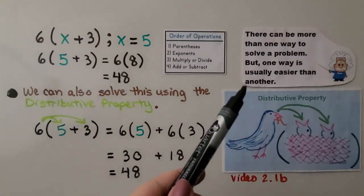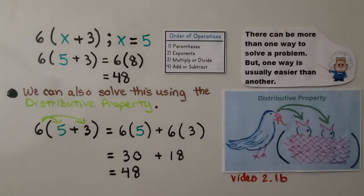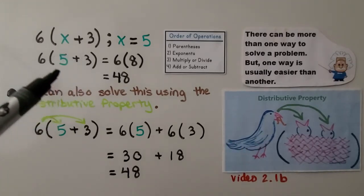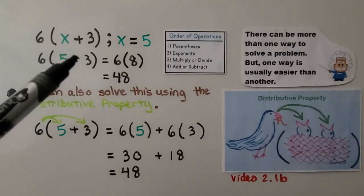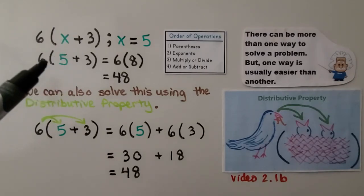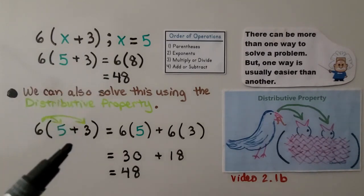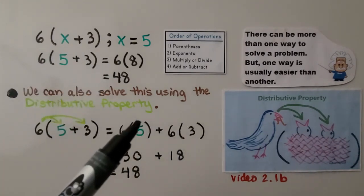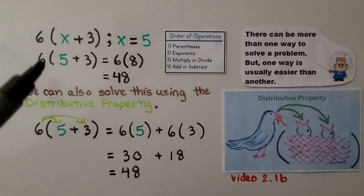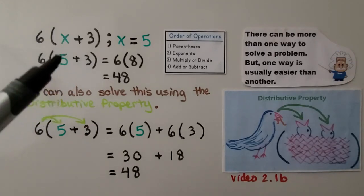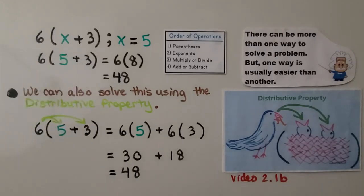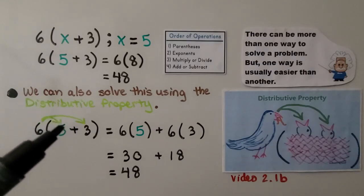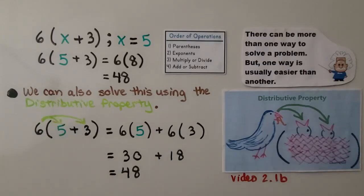There can be more than one way to solve a problem, but one way is usually easier. My preference for expressions like this is to add within the parentheses first and multiply once, rather than multiplying twice and then adding. But you could also distribute and get the same answer.